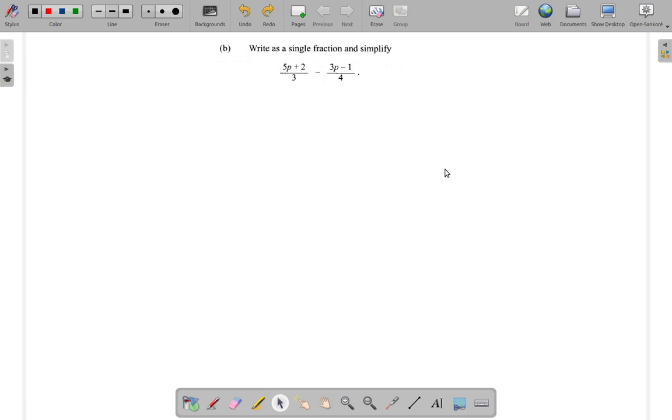We look at part B of question 2. Here it says write as a single fraction and simplify. You have 5P plus 2 over 3 minus 3P minus 1 divided by 4.